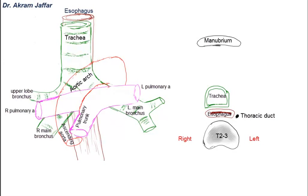The arch of the aorta also compresses the esophagus. So one of the natural constrictions of the esophagus is made by the arch of the aorta, and the second is made by the left main bronchus. Notice that the arch passes backwards as well as to the left, then continues as the descending aorta. The beginning and end of the arch of the aorta are both located at the level of the transverse thoracic plane, so the whole arch of the aorta is located in the superior mediastinum.